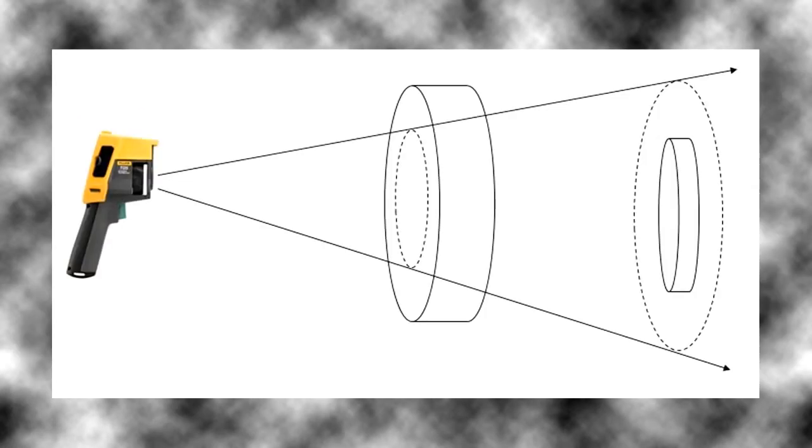In our graphic you see that the first target is bigger than the spot size, which is the preferable situation. The measurement area is contained completely on the target.